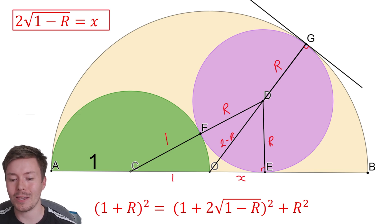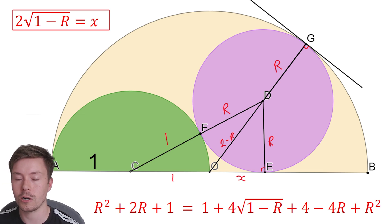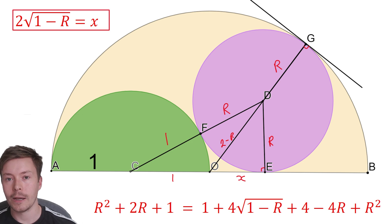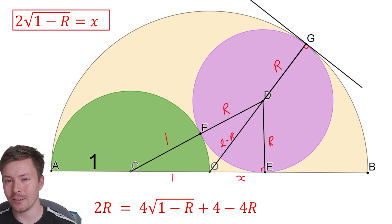The next step is to start squaring everything and getting rid of the brackets. We get R squared plus 2R plus 1, that's pretty straightforward, but then we get 1 plus 4 root 1 minus R plus 4 minus 4R plus R squared. We're going to cancel the R squareds, and then we're going to cancel the 1s, and we're going to end up with something a bit neater like this. At this point, I want to get everything that is outside of my square root onto one side so then I can just square both sides.